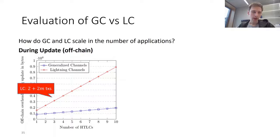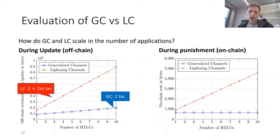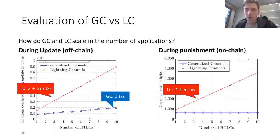We also looked at the pessimistic case—where punishment must happen on the blockchain—measuring on-chain cost in bytes versus the number of hash time-lock contracts. For generalized channels, the byte overhead is constant, independent of the number of contracts, due to the punish-then-split paradigm. More concretely, Lightning requires 2 + m transactions to be posted on-chain, whereas generalized channels only require 2 transactions.